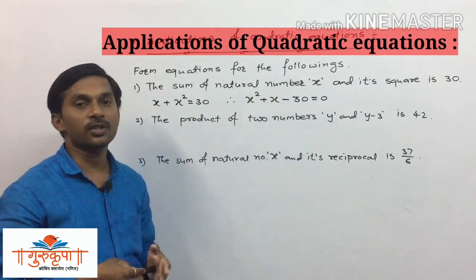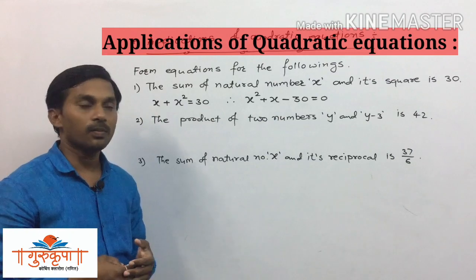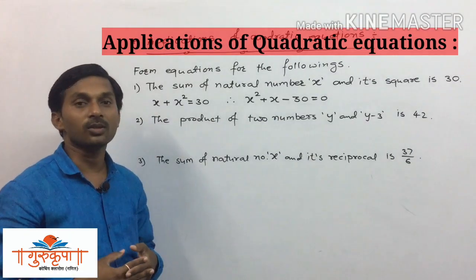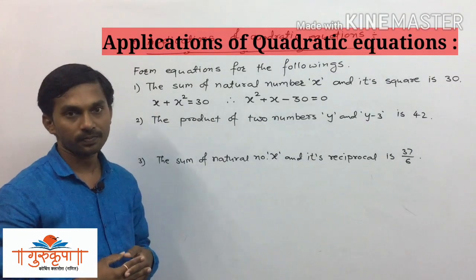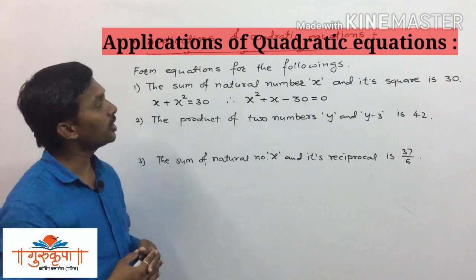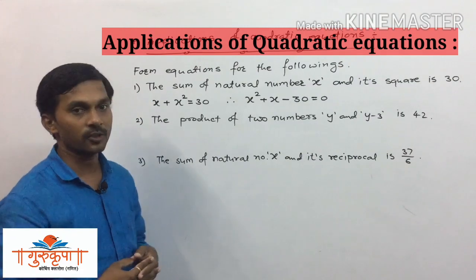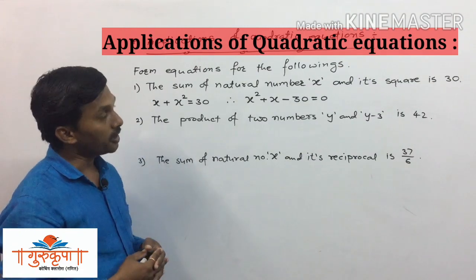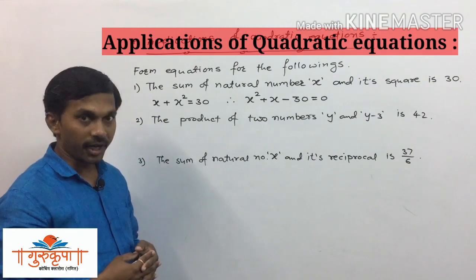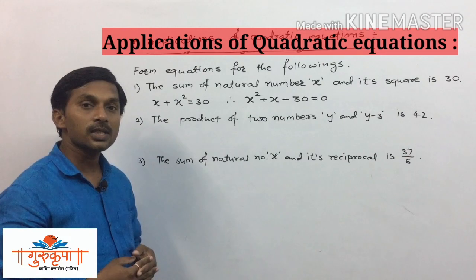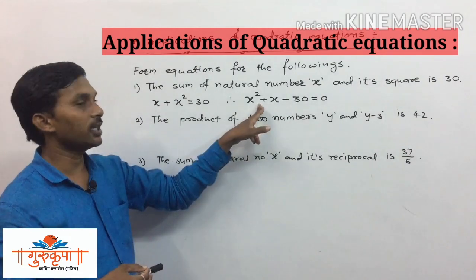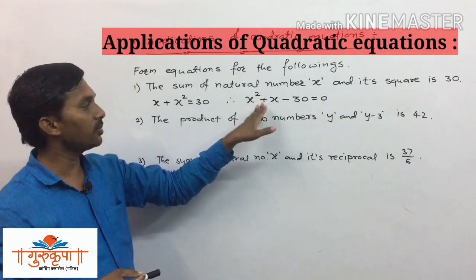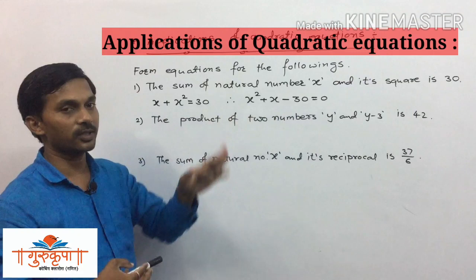So the required quadratic equation is x² + x - 30 = 0. We can now simplify this quadratic equation by any of the three methods: factorization method, completing the square method, or the formula method.